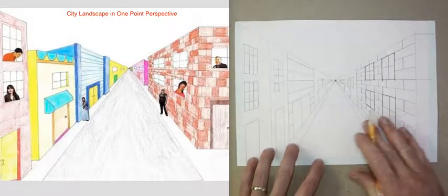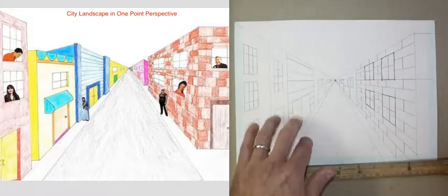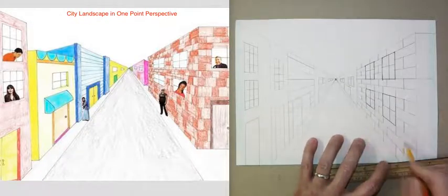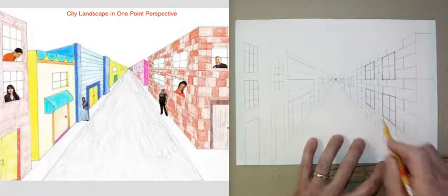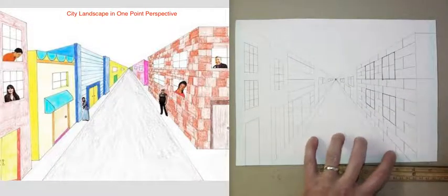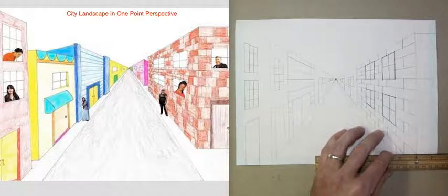As I turn the corner here, all of my lines go from being on a diagonal following lines of perspective to being horizontal and following the lines on the graph paper — because we're looking at the side of the building.